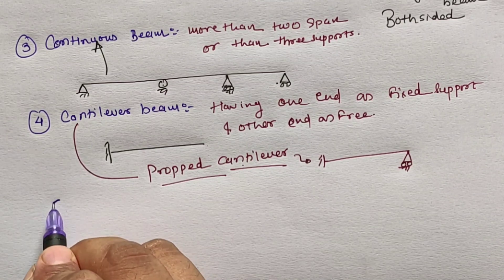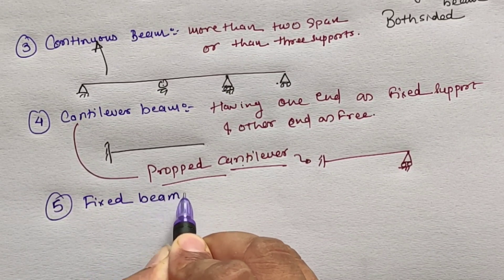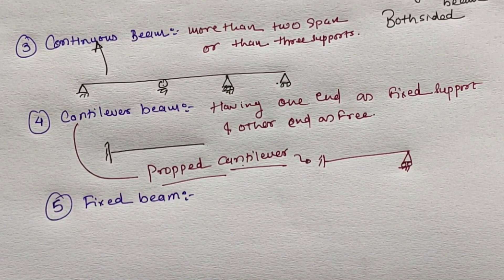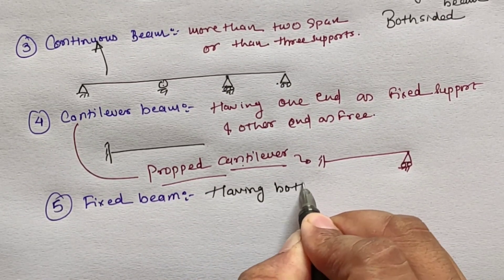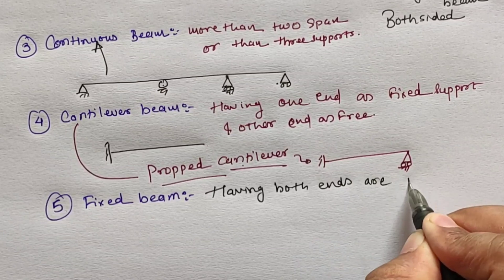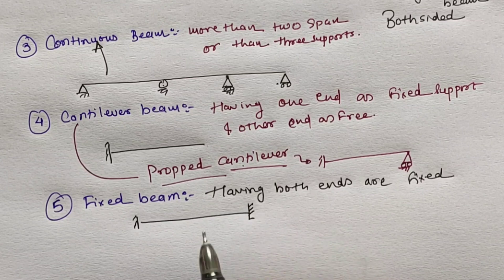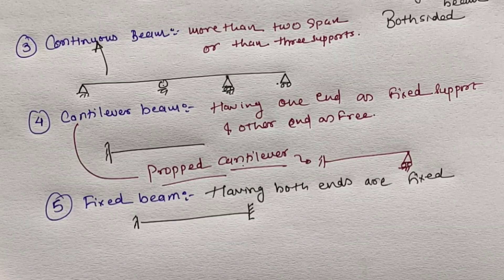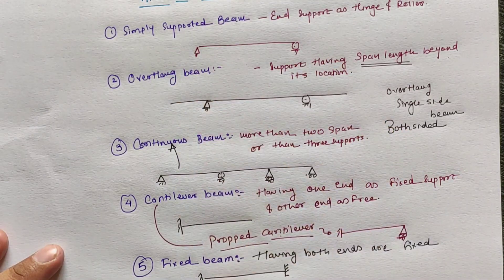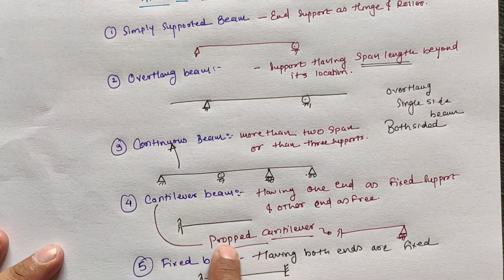The fifth beam is the fixed beam, defined as a beam having both ends fixed. According to support conditions, there are a total of five types of beam: simply supported beam, overhang beam, continuous beam, cantilever beam — with its subdivision the propped cantilever — and the fixed beam.